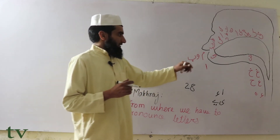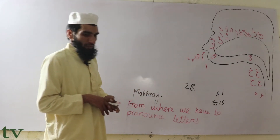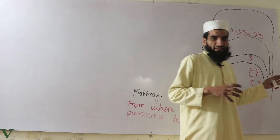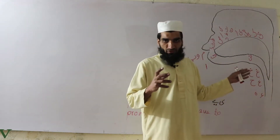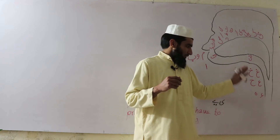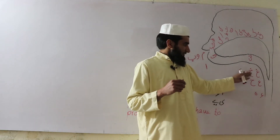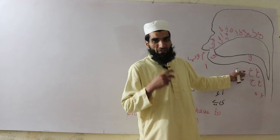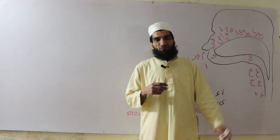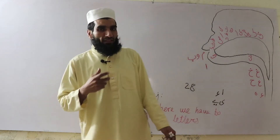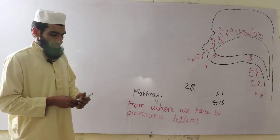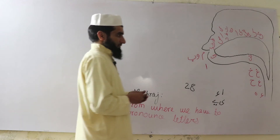Our throat is divided into three parts: upper throat, mid throat, and bottom throat. Different letters are pronounced from different parts of the throat, and these are their Makharaj. So let us start discussing them.